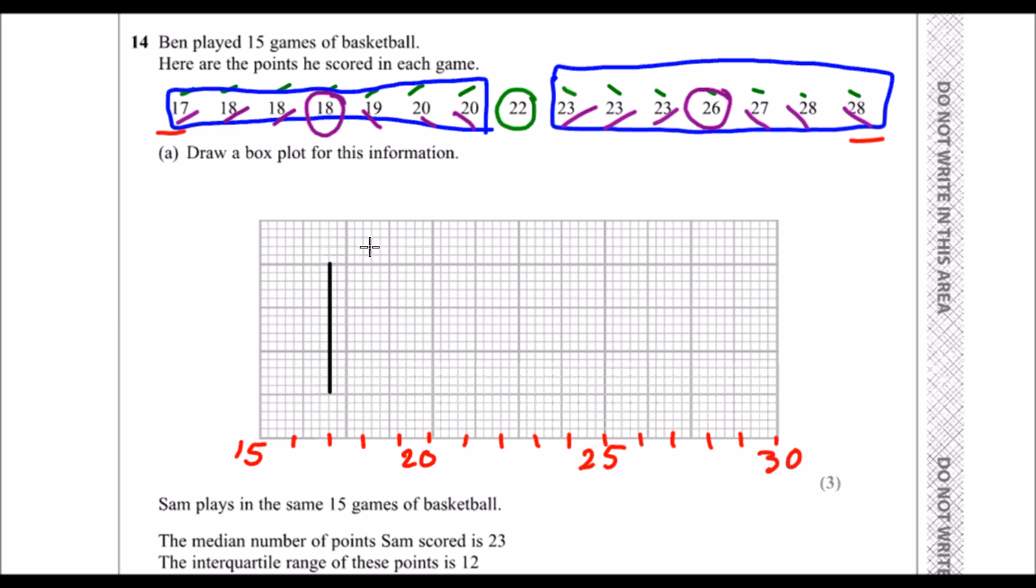So that's 17. We've got 18 as the, I'm doing the same size, 18 as the lower quartile, 22 as the median. That's this one. I'll straighten that back up. 26 is the upper quartile and 28 is the highest.